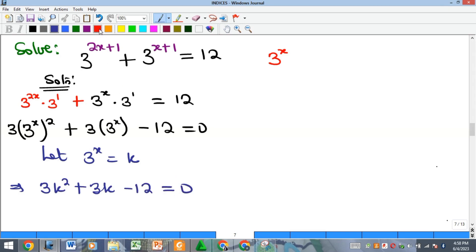Okay, so what can I do now? There are common terms. I can cancel out the common terms, which is 3. So if 3 divides through, I will have k squared plus k minus 4 equal to 0. That's dividing every term here by 3, and immediately we have a quadratic equation which we can solve either by factorization or any other method.